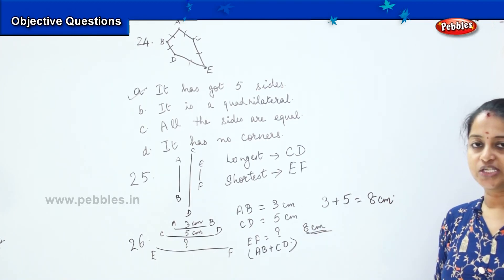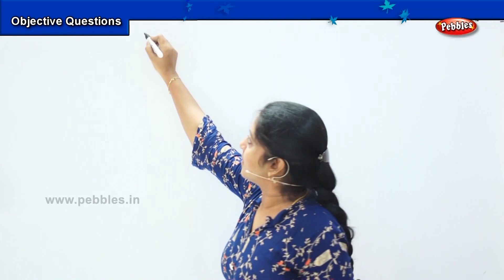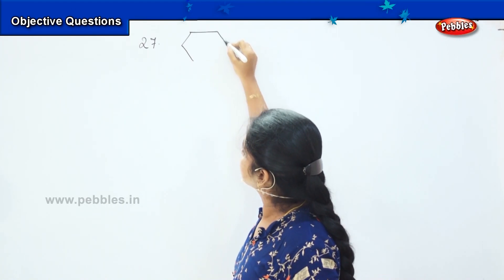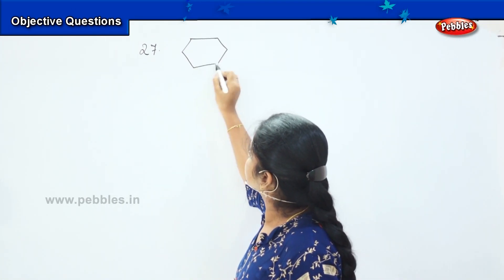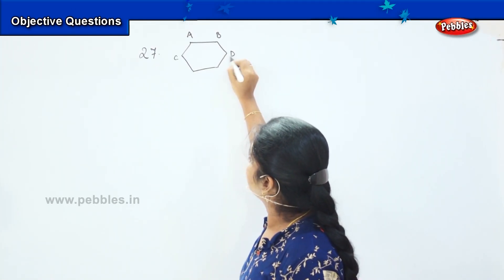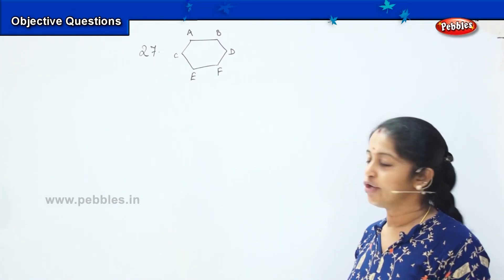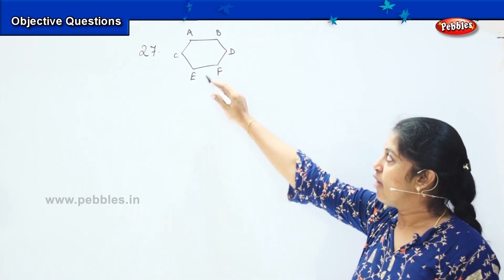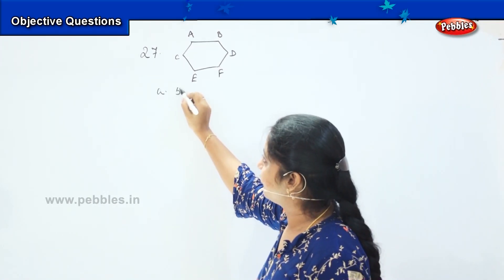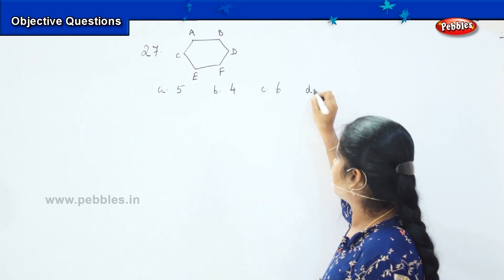Are you clear with this question? Shall we move to the next one? The next question is question number 27. See the picture here. We will name it A, B, C, D, E and F. Your question is you have to identify how many sides this figure has. Your options are A: 5, B: 4, C: 6, and D: 3.